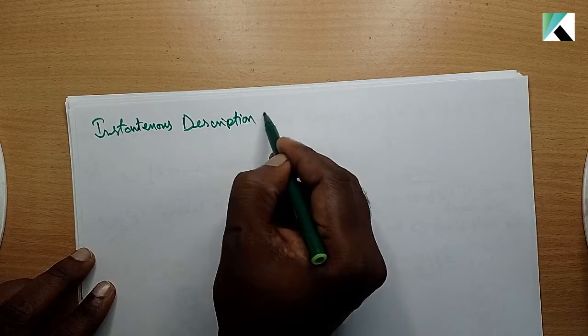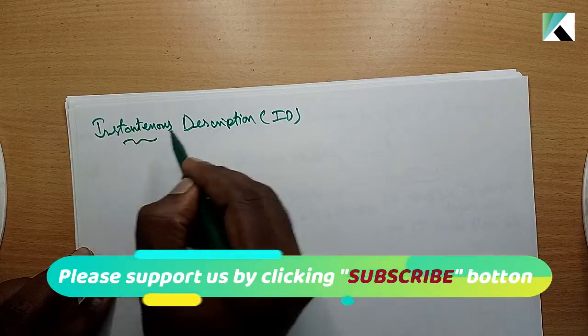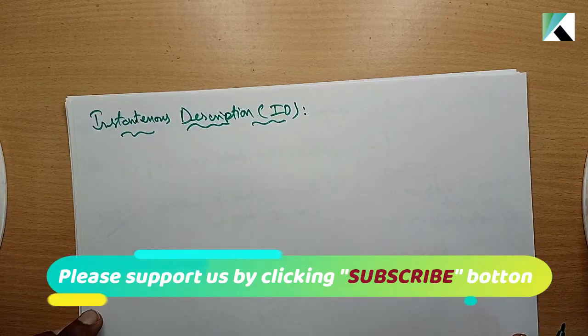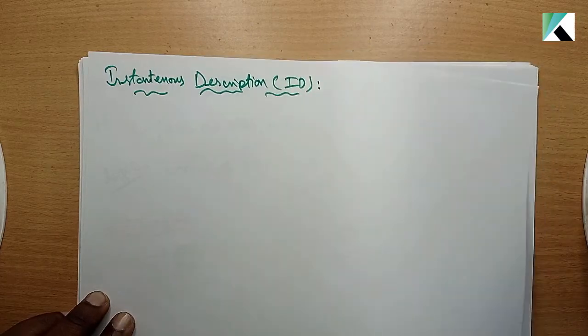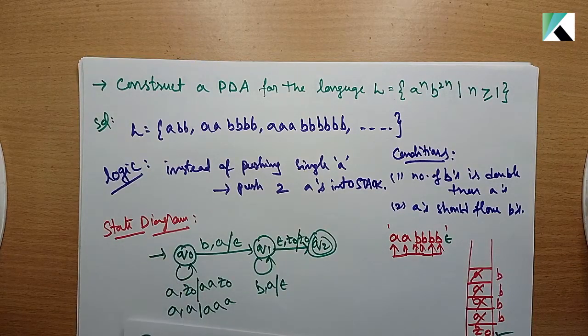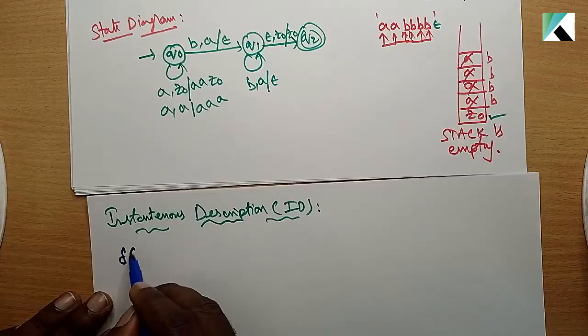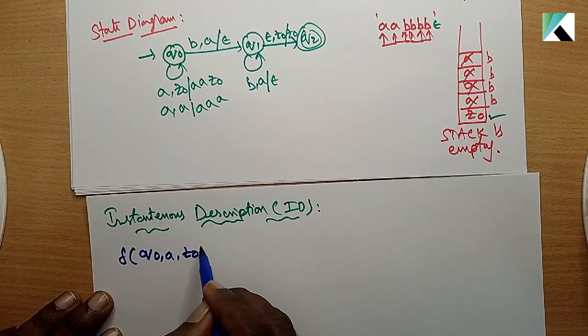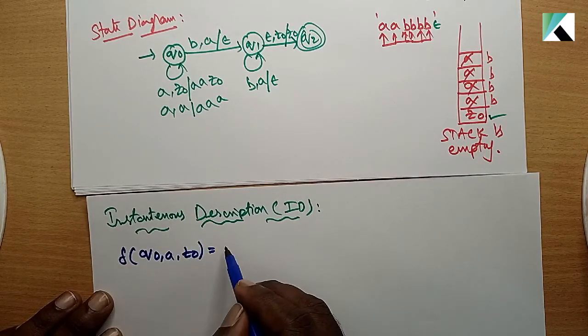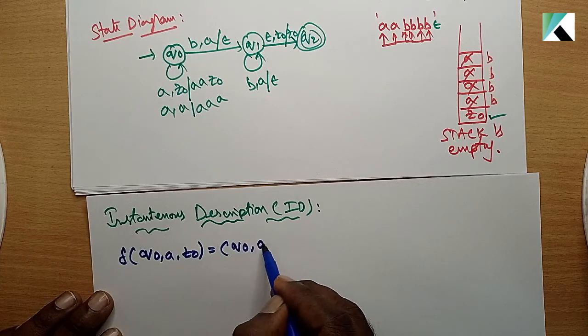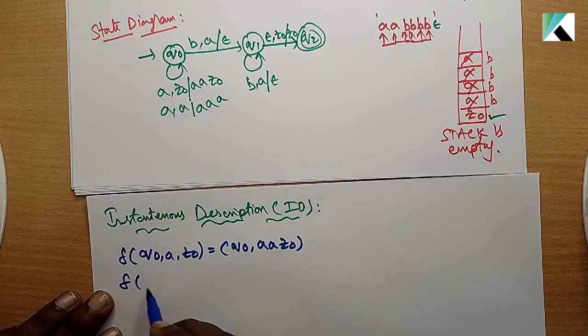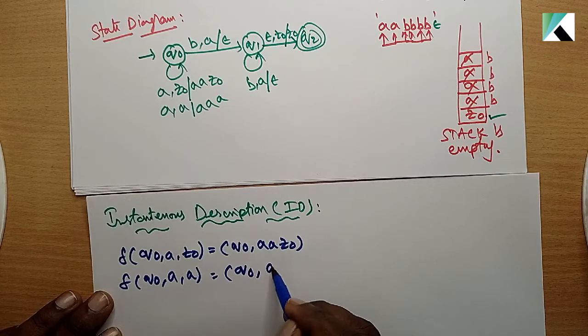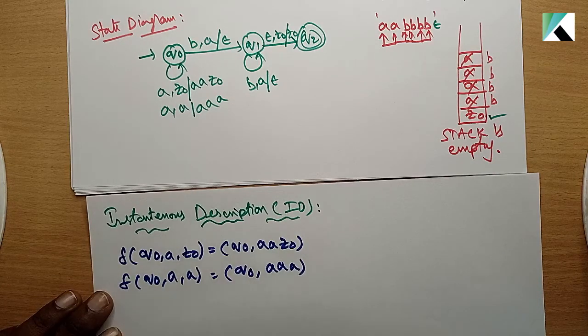To make the problem more clear, we'll look at the instantaneous description. Delta is the function. Initial state is q0. q0 on a with z0 pushes two a's. Next a in the same state q0 encounters a on the stack, so again push two a's.